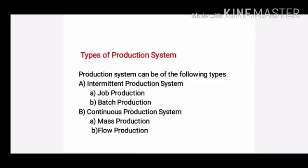Production systems are mainly of two types: intermittent production system and continuous production system. The intermittent production system is again classified into two types — job production and batch production.